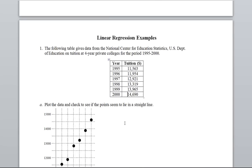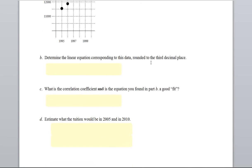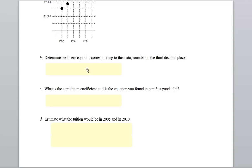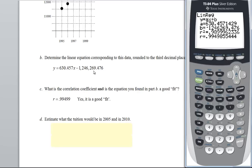So let me go back down. Let's see what the directions are. Determine the linear equation corresponding to this data rounded to the third decimal place. So now every one of your calculators, every one of the 83's and 84's, you have the equation built in here. You just have to put the number in for it. Don't write down this screen. So my Y would be 630.457X minus 1246269.476. What is the correlation coefficient and is the equation you found in part B a good fit? Remember, it was 0.994 something. And yes, it is a good fit.